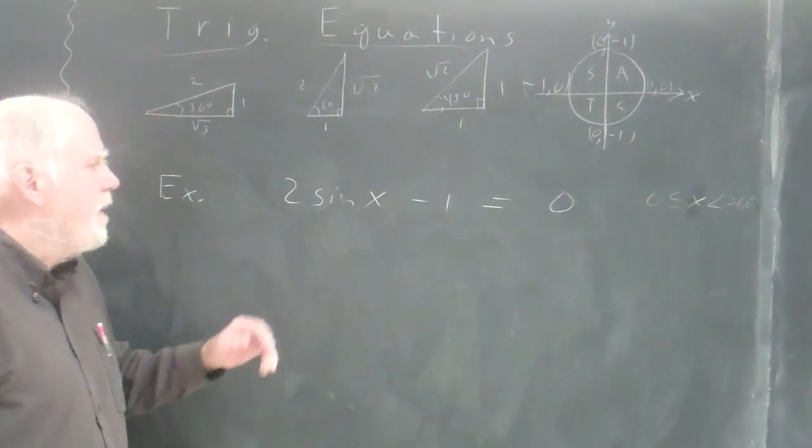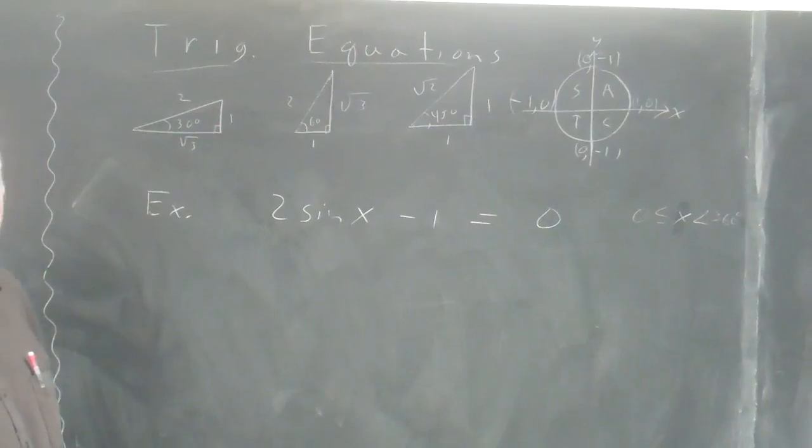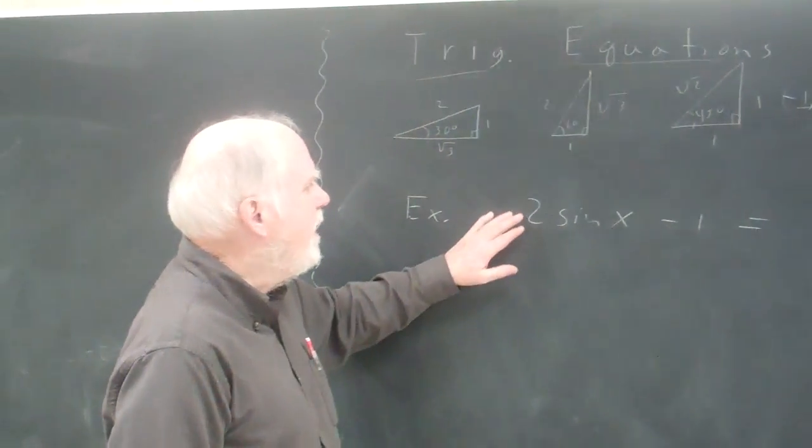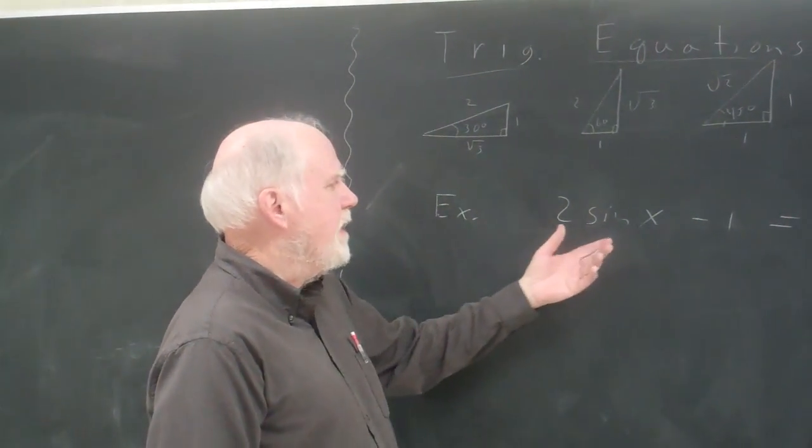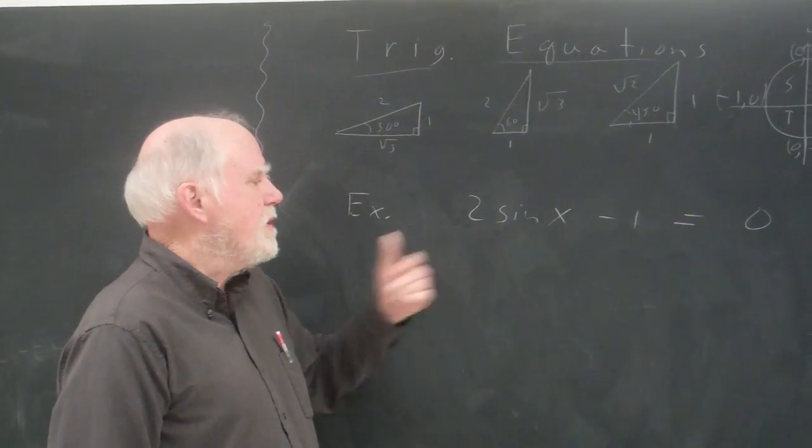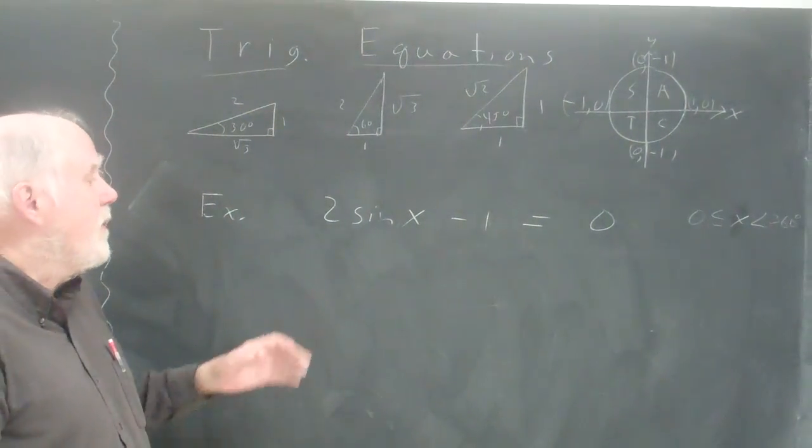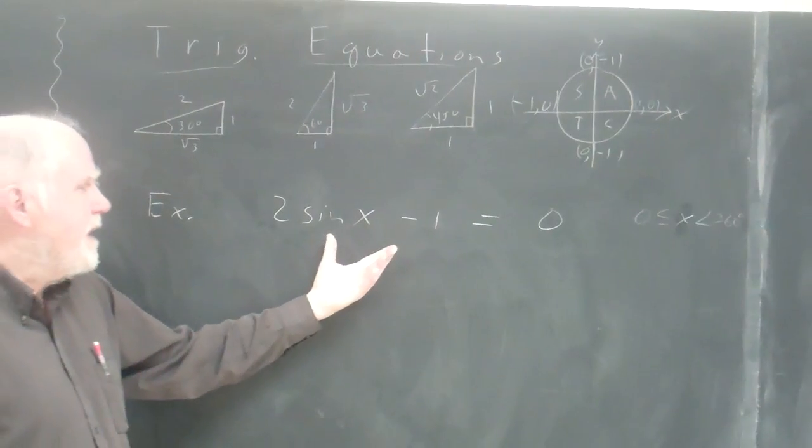When solving more complicated trig equations, there's really no one method for doing it. You just have to be good at solving equations using algebra, and also you have to know some identities. The strategy is to take any trig equation we have and reduce it down to a very simple one.